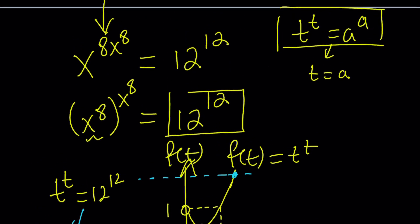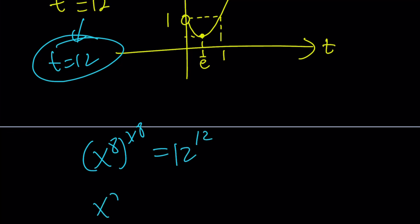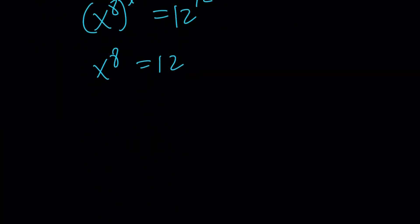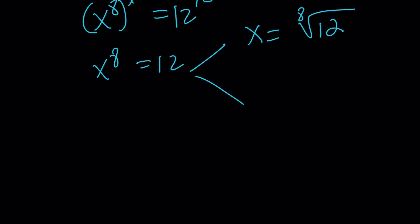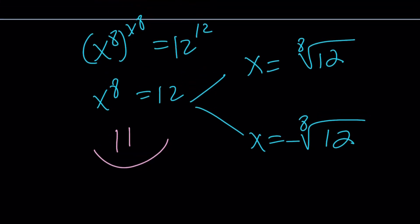So x to the 8th equals 12. But this gives us two solutions because 8 is even — x can be the 8th root of 12, or the negative of that. And that brings us to the end of the video. Thank you for watching, I hope you enjoyed. Please don't forget to comment, like, and subscribe. Don't forget to comment on what you think about the live stream I'm planning. Until next time — be safe, take care, bye-bye.